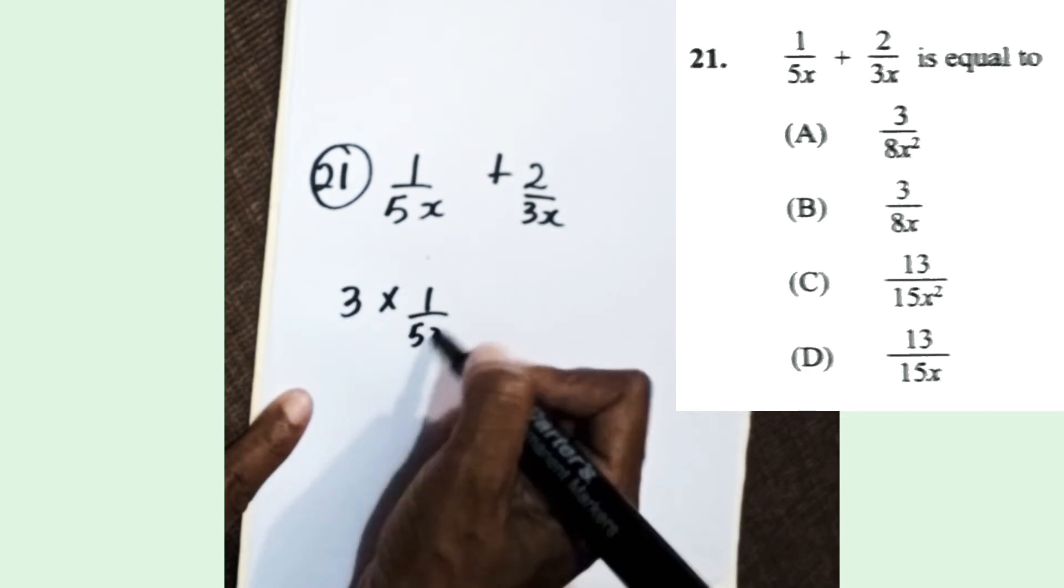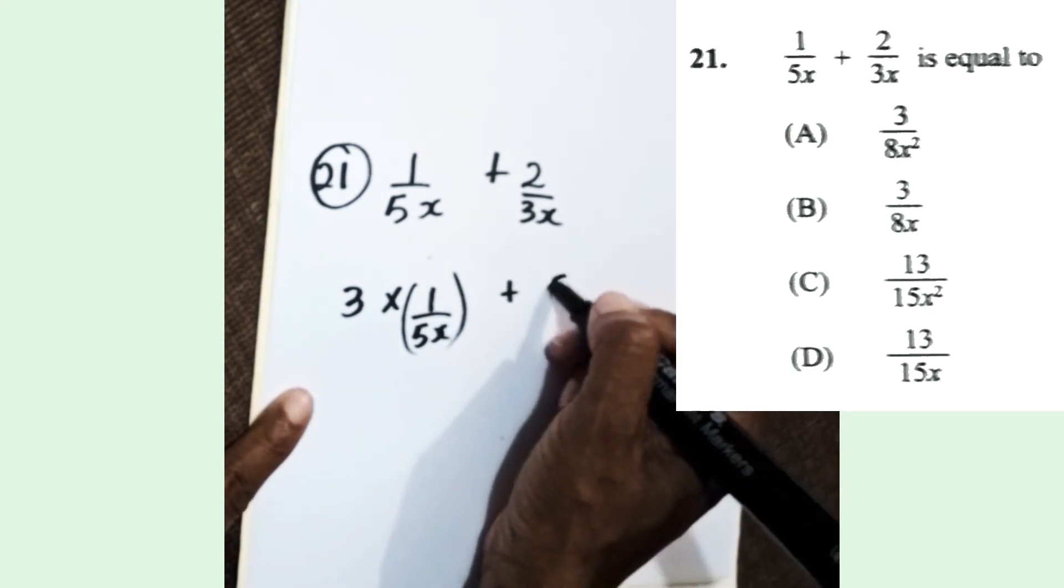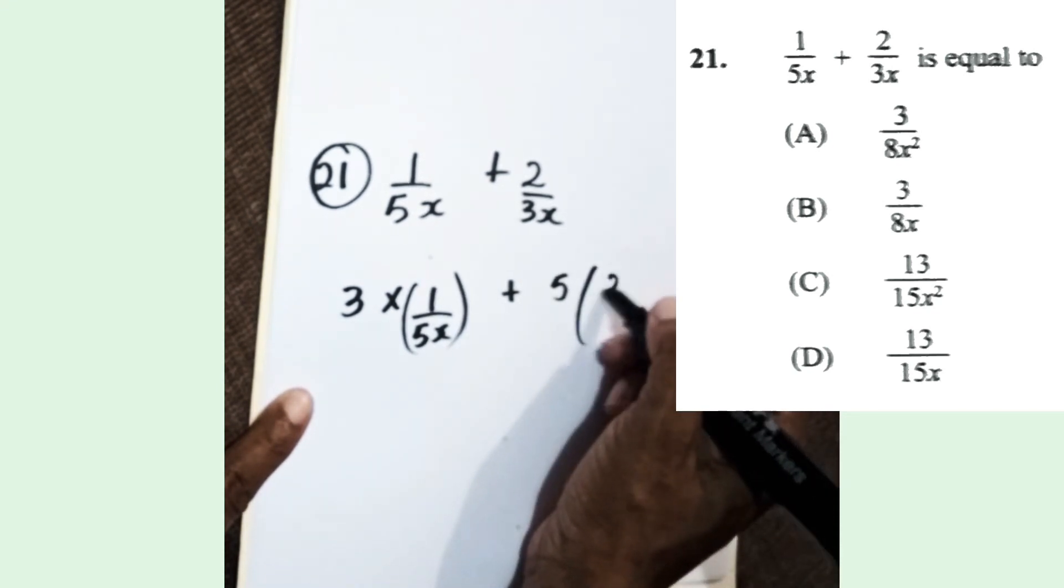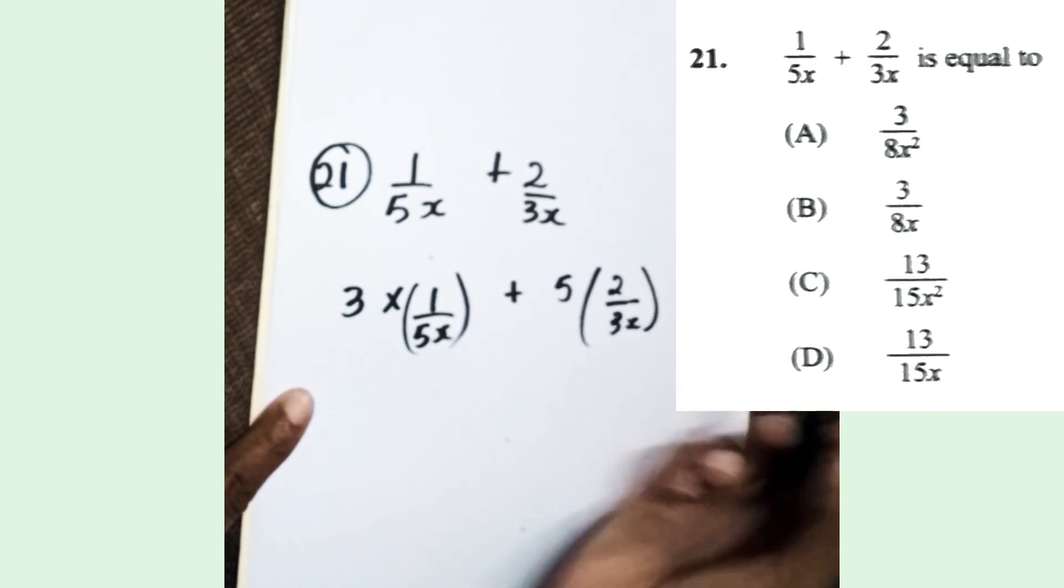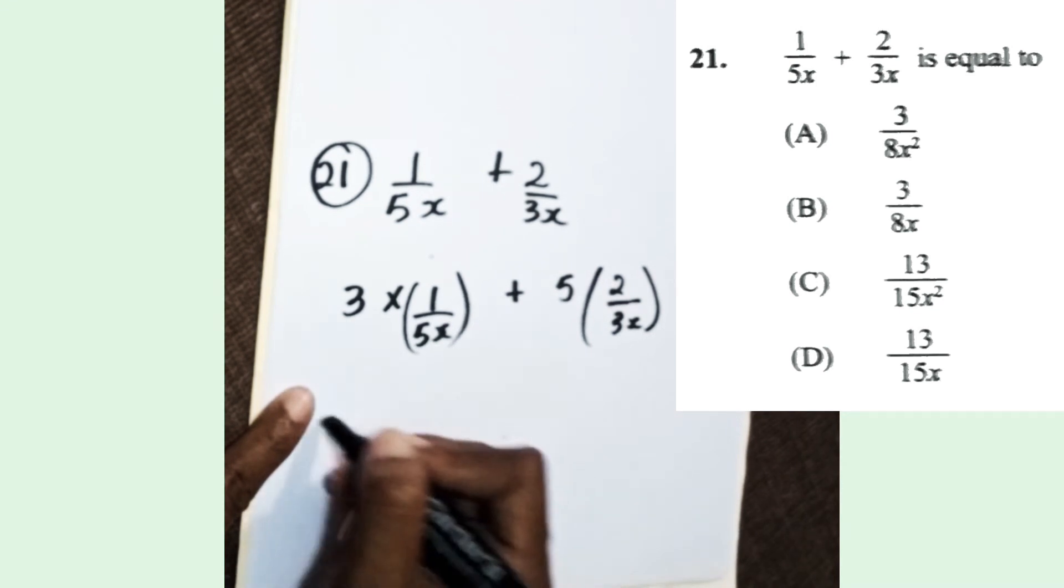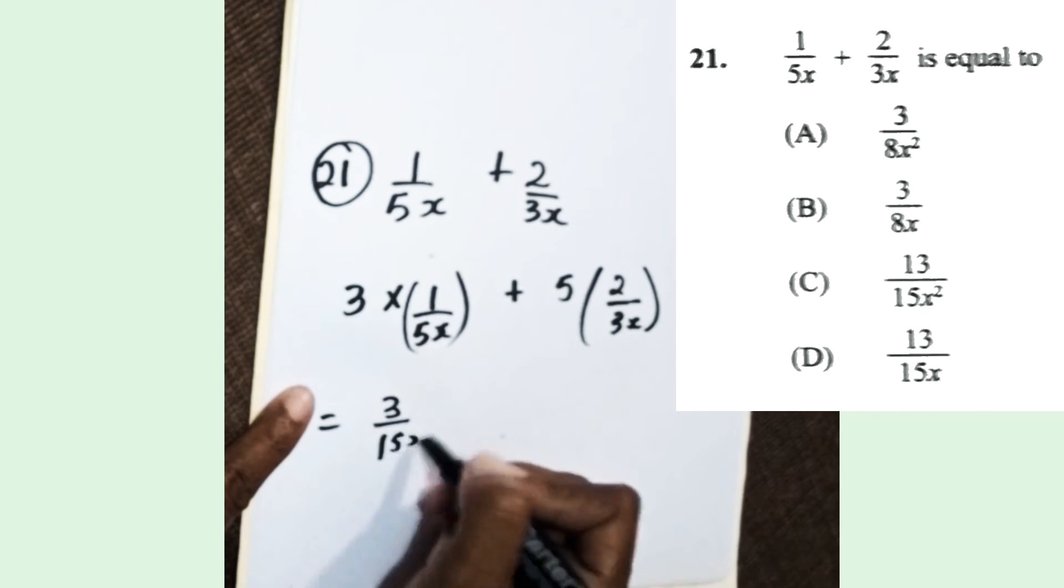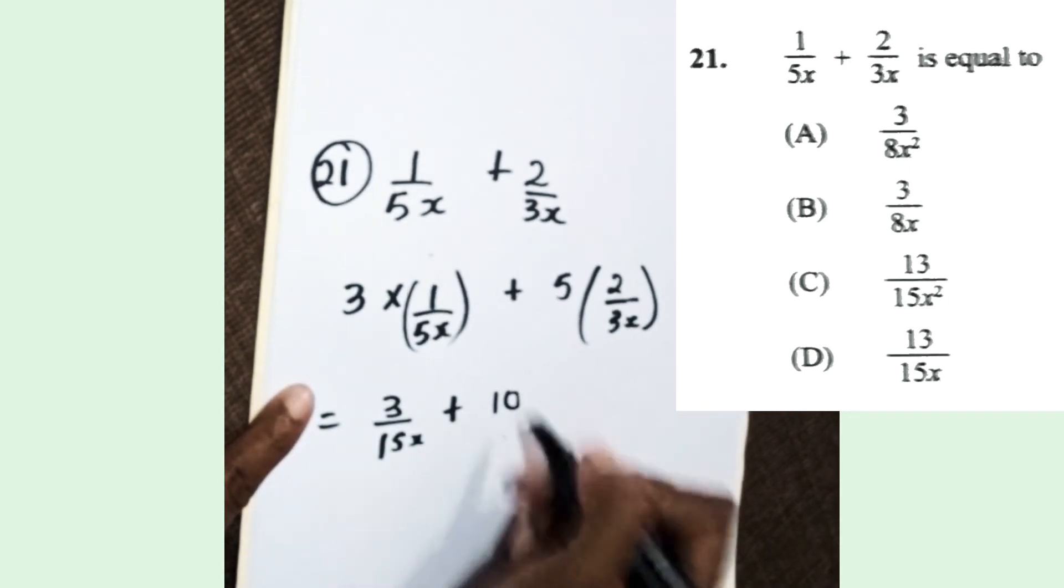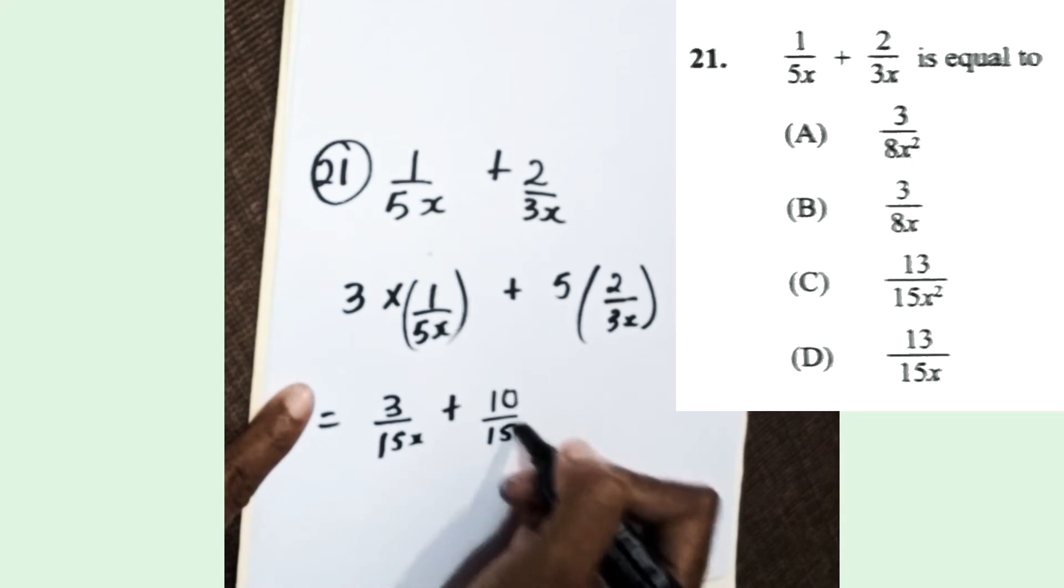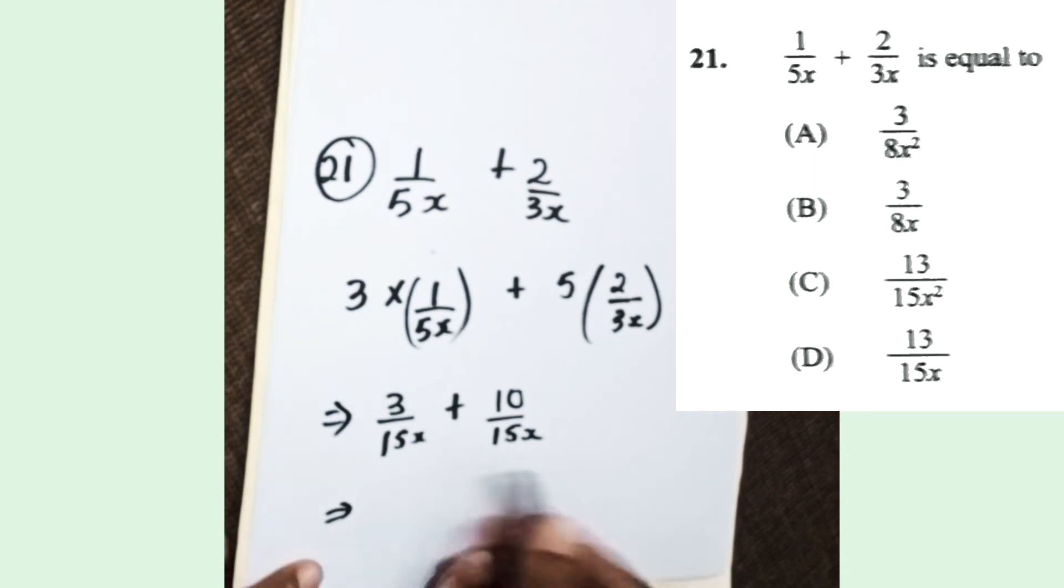We multiply both fractions by the coefficients of x. So 1 over 5x, we multiply that by the coefficient of the next fraction, and we do the same for the next fraction to make the denominators the same. We have 3 over 15x and then 10 over 15x.